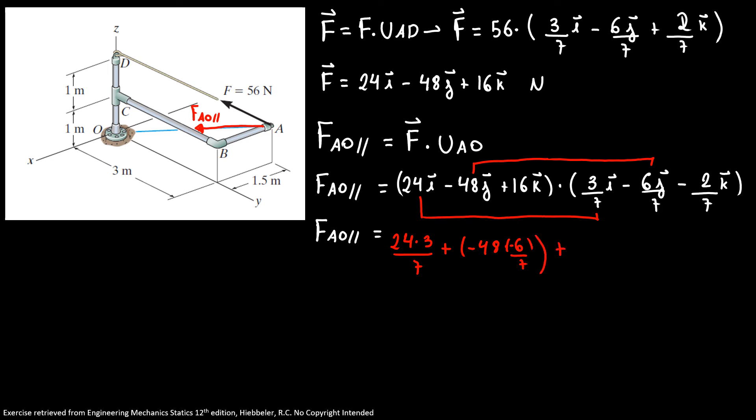Plus K with K, 16 times negative 2 over 7. So my force along AO will be 10.3 plus 41.1 minus 4.58. So my force along AO is equal 46.8 newtons.